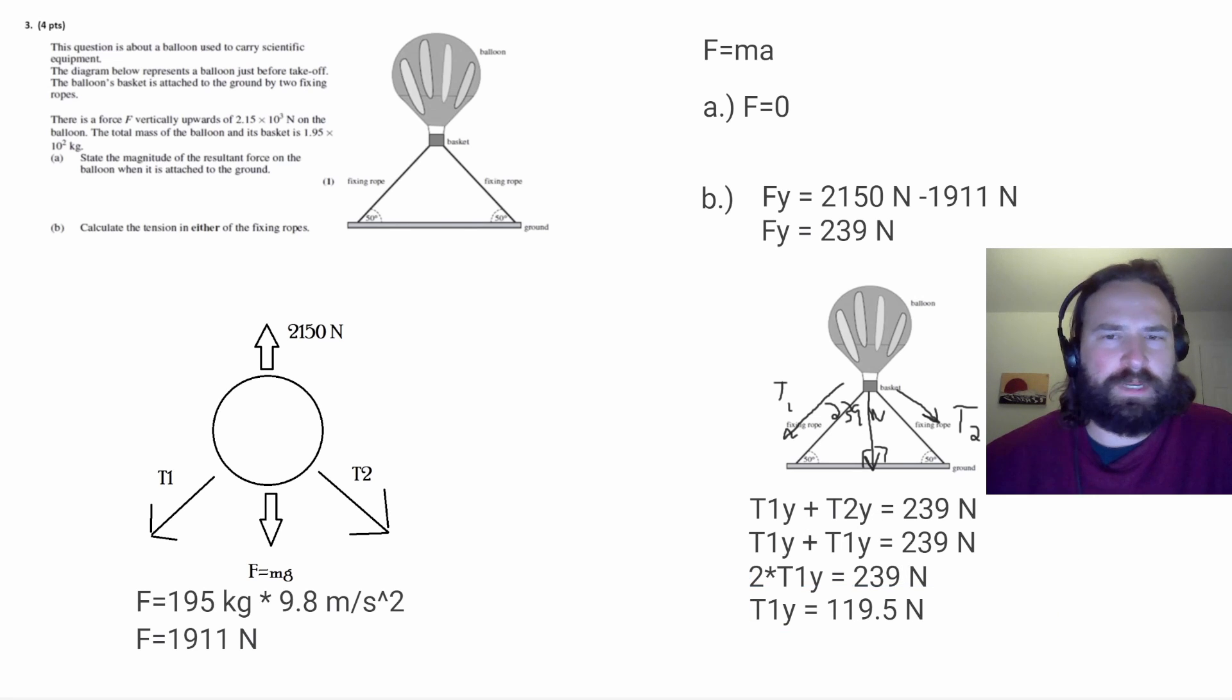From here, we can actually draw a little triangle that just has the T1 force, right? So we have this right triangle with a 50 degree angle in here. And our T1 force is going to be the hypotenuse of that triangle. And the value that we just found is this downward force, which is 119.5.